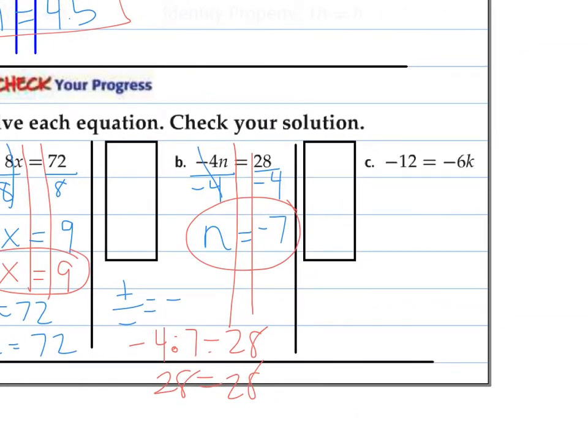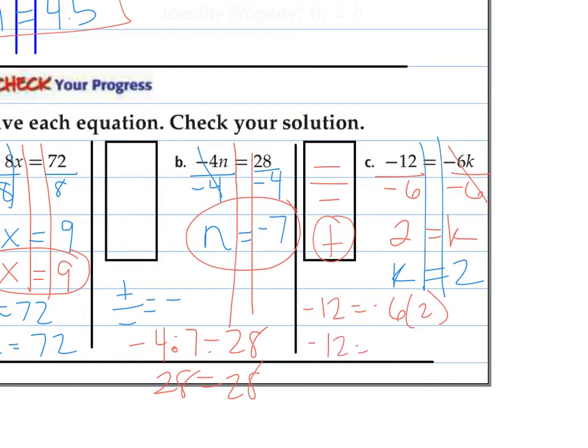Last one I'm multiplying to try. Notice K is on the other side. Same rules apply. K is being multiplied by negative 6, so we're going to undo that by dividing by negative 6. Negative 6 divided by negative 6 is 1. Negative 12 divided by negative 6 is a positive 2. A negative over a negative is a positive. I'm going to rewrite this variable first, and I'm going to double check. Negative 12 is negative 6 times 2. A negative and a positive is a negative, so it works.